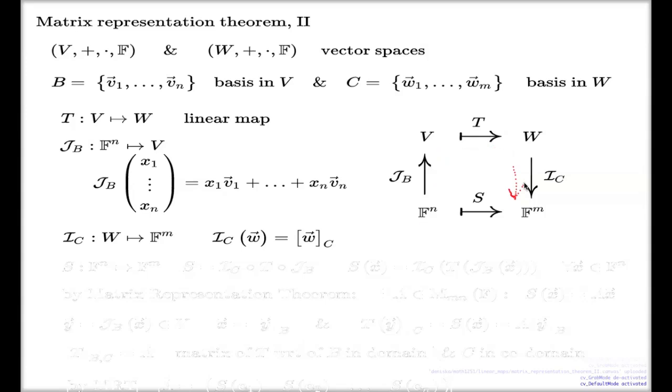My S is a map which takes Fⁿ to Fᵐ and it acts like this: it's a composition of these three maps together. I use the circle to denote the composition of linear maps.